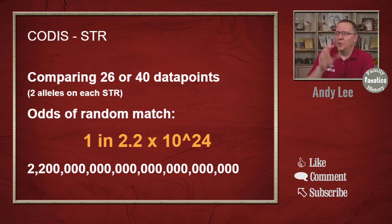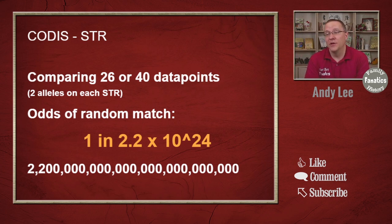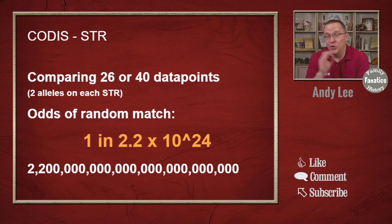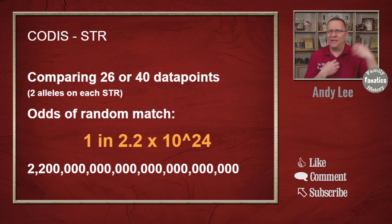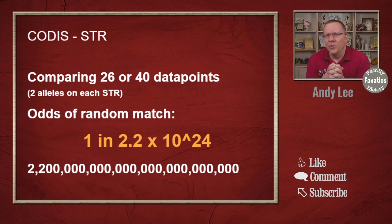To put it in perspective, modern humans have been around for about 100,000 years, and it's estimated there have been about 100 billion humans born — the majority in the last 100 years. In order to get to the point of 2.2 septillion, humans would have to exist for another 2.2 trillion years. That's not going to happen — our sun is expected to burn out in about 5 billion years. So we're never going to get to the point where we can expect this type of DNA sample to perfectly match somebody else randomly.